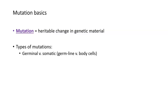We can describe mutations by where they occur in the body or what type of cells they occur in. Germinal mutations occur in cells in the germline or the gametes, while somatic mutations occur in the normal cells of your body, like a lung cell or a cheek cell.